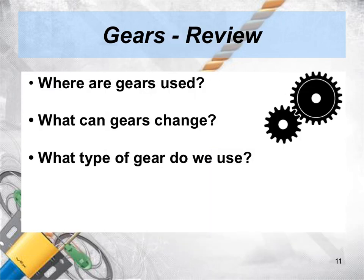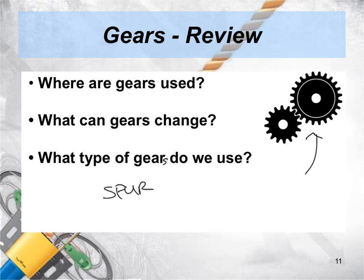So to review: we talked about how gears are used, and hopefully you now remember some examples of where gears are used. We talked about how gears can change three things — do you remember what they are? Speed, torque, and direction. And lastly, what types of gears do we use? In our class, you might remember that we use what's called the spur gear, and here's an example of a spur gear right here.